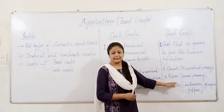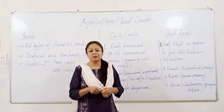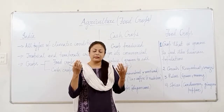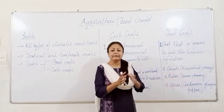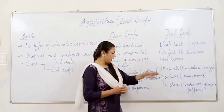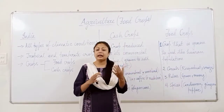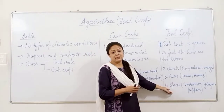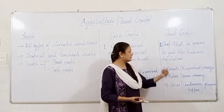Food crops also include pulses like gram, moong, and masoor. Students are surely familiar with moong and masoor — they are prepared in our homes daily and are a staple food. We consume rice and pulses everyday; they are the staple food of a large number of Indians. Apart from cereals and pulses, spices like cardamom, ginger, and pepper are also food crops. You might wonder why spices are included, as they are not compulsory staple food.